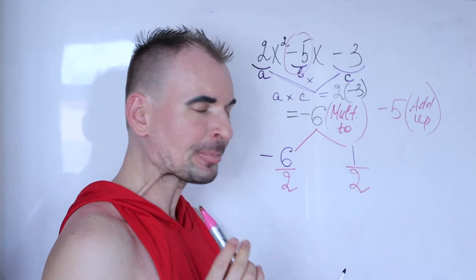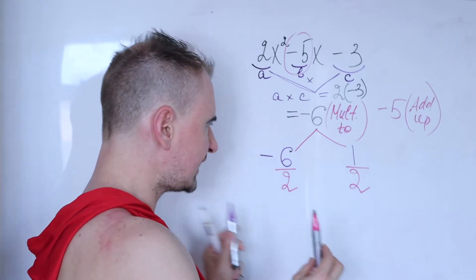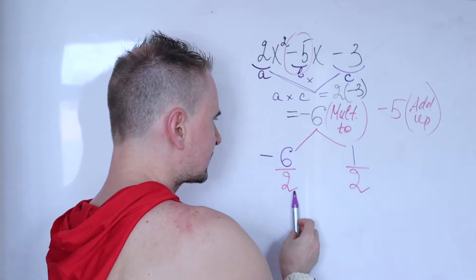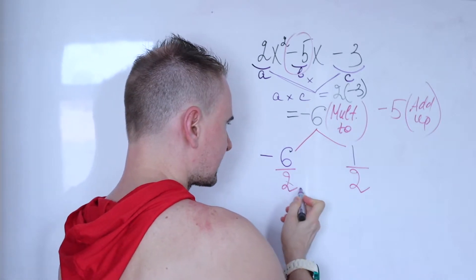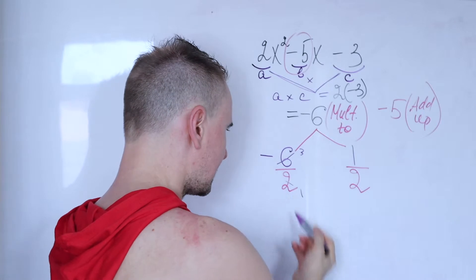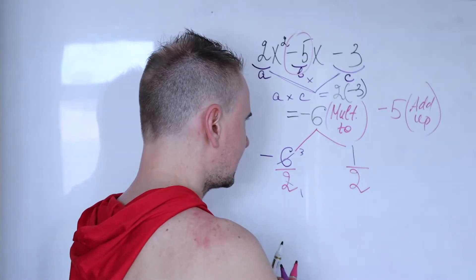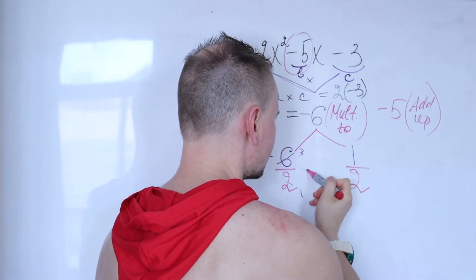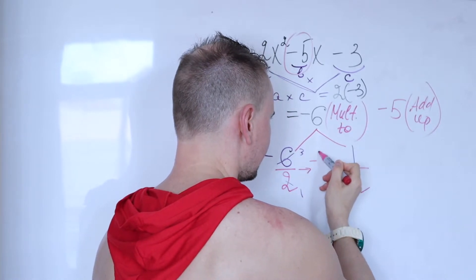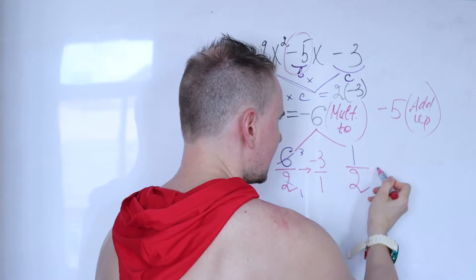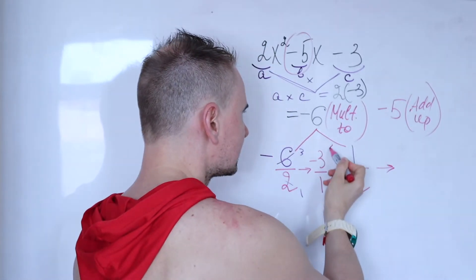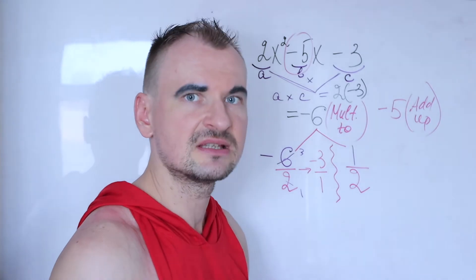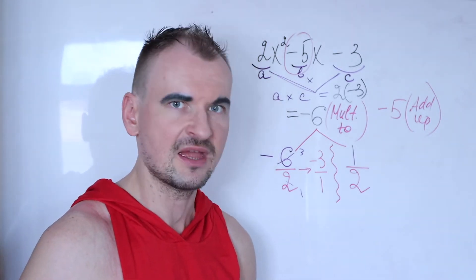Now simplify. Since 2 goes into 6 three times, the first fraction simplifies to negative 3 over 1, which is just negative 3. The second one, 1 over 2, is already in its simplest form, so you leave it as is.